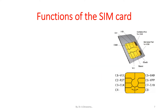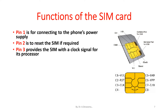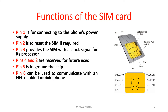Functions of the SIM card pins: Pin number 1, VCC, is used for connecting to the phone's power supply. Pin number 2 is to reset the SIM card if required. Pin number 3, Clock, provides the SIM card with the clock signal for its processor. Pin numbers 4 and 8 are reserved for future use. Pin number 5 is to ground the chip.